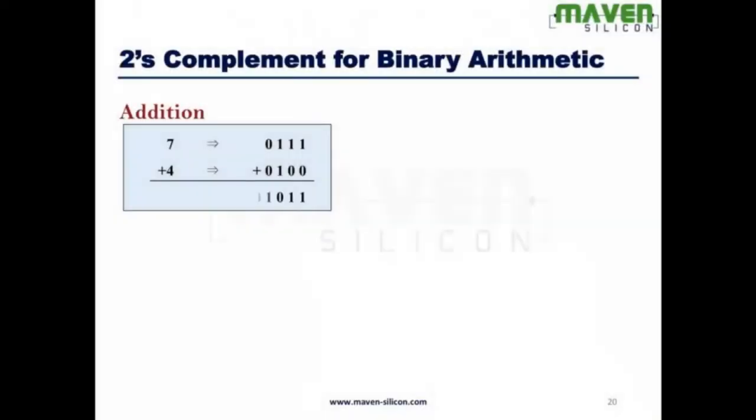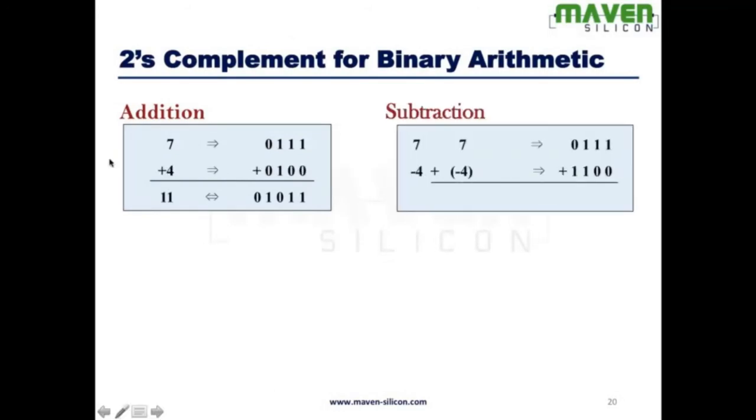I want to show you how you can perform addition and subtraction using 2's complement. So here, I am adding the values 7 plus 4. It is straightforward. You can go ahead and add the binaries. You get the value 11. But when it comes to subtraction, what do you need to do? You have to write the 2's complement for the negative value.